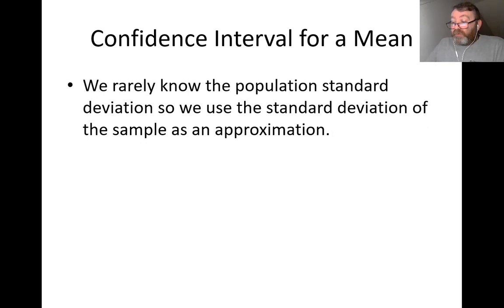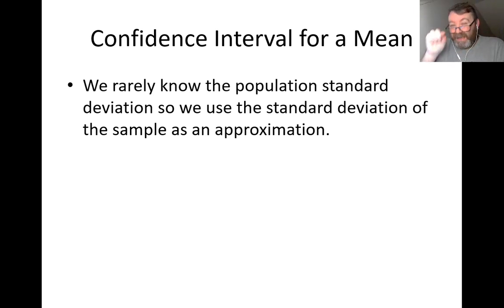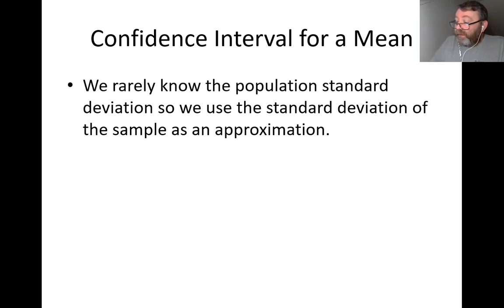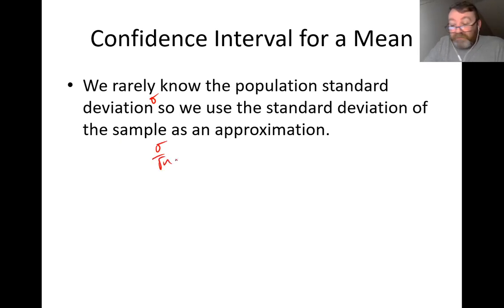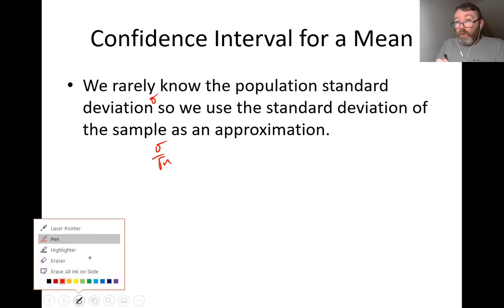We rarely know the population standard deviation because we don't deal with the entire population. Unless you're doing a government census, you won't know σ. However, we are allowed to use the standard deviation of the sample as an approximation for σ. The population standard deviation is sigma (σ), and the standard deviation of the sample is σ/√n, where n is the number of people in the sample.